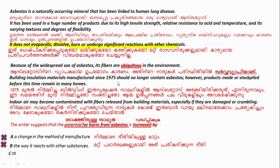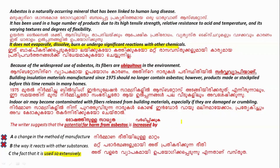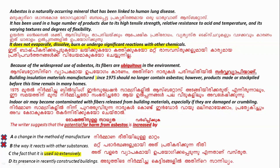Option C says: the fact that it is used so extensively — used so much. This could be the possible answer. Option D says: its presence in recently constructed buildings. That is obviously wrong because according to the passage, building insulation manufactured since 1975 should no longer contain asbestosis. So recent constructions will not have asbestosis. Therefore the correct answer is Option C — the fact that it is used so extensively. I hope you understood it.